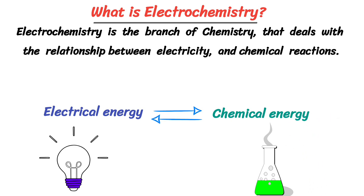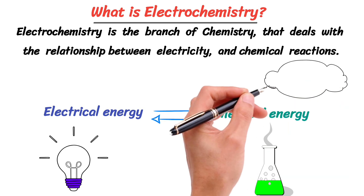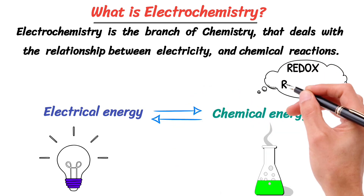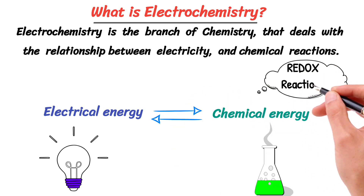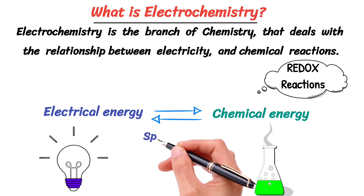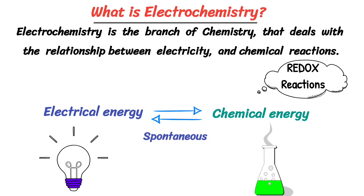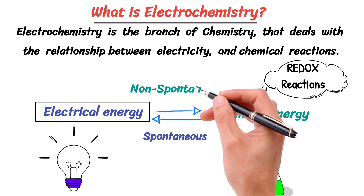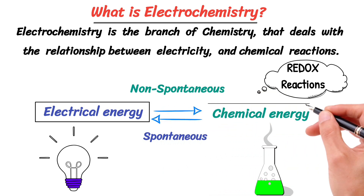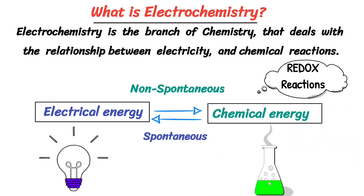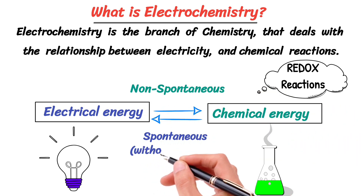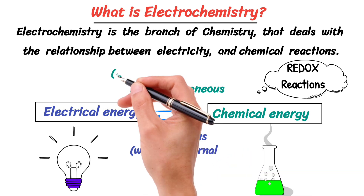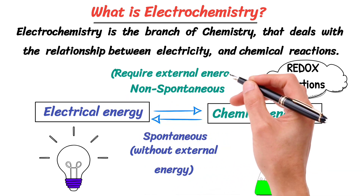This conversion involves oxidation and reduction reactions, which are also known as redox reactions. Redox reactions either take place spontaneously and produce electricity, or electricity is used to drive non-spontaneous redox reactions and converts into chemical energy. Spontaneous processes occur naturally without external energy, while non-spontaneous processes require external energy.